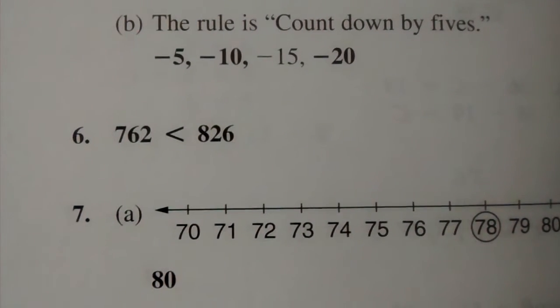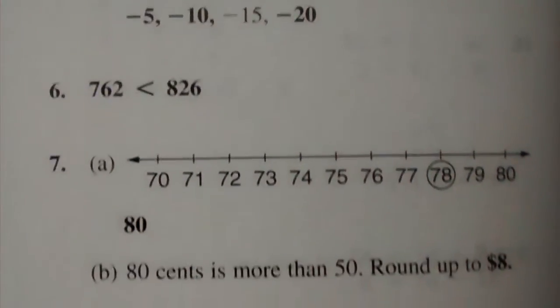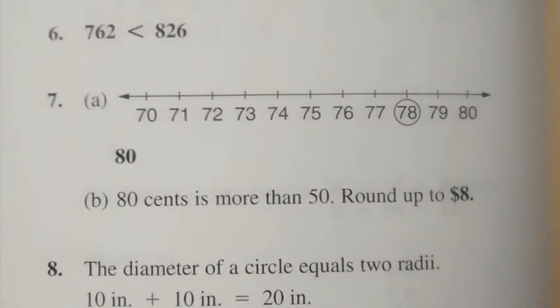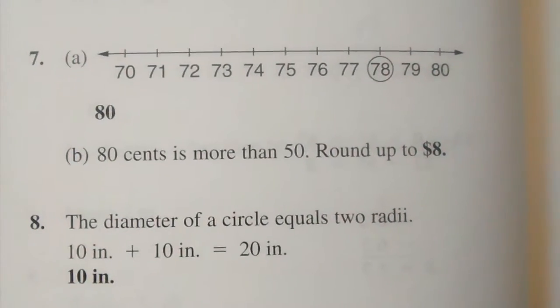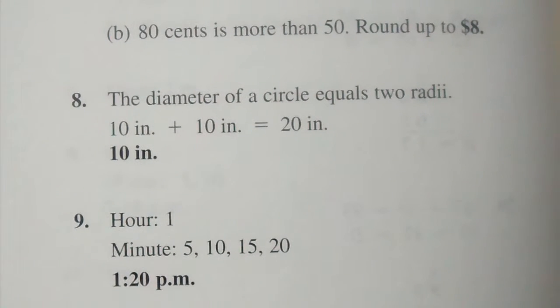6: 762 is less than 826. 7A: 80. B: $8. 8: 10 inches.